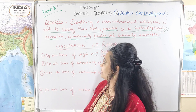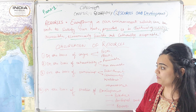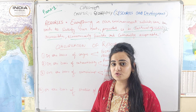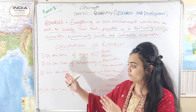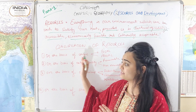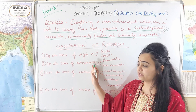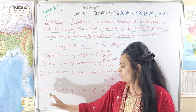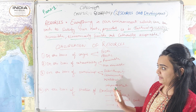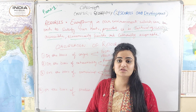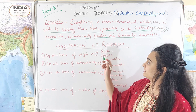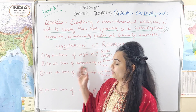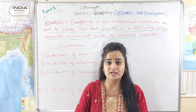Now let's talk about the classification of resources. Resources are classified on four terms: on the basis of origin, on the basis of exhaustibility, on the basis of ownership, and on the basis of status of development. On the basis of origin, we talk about biotic and abiotic resources.